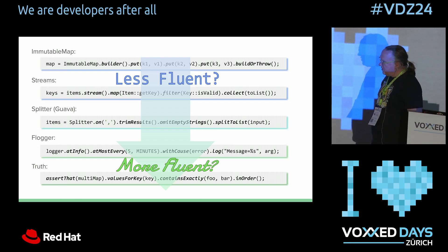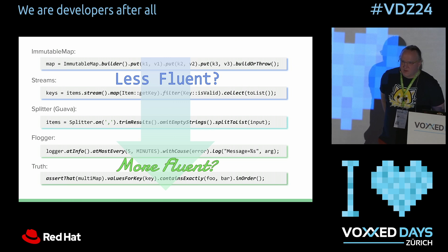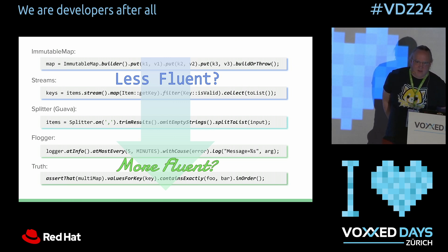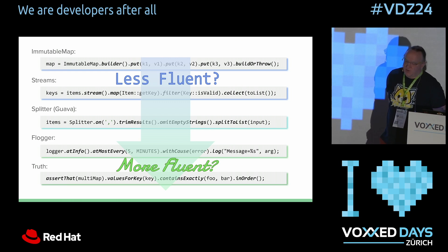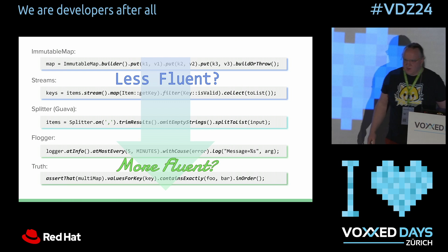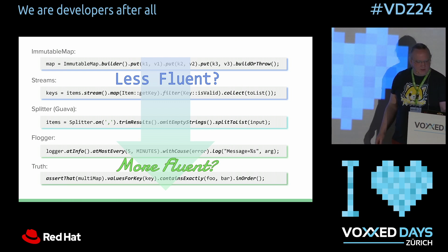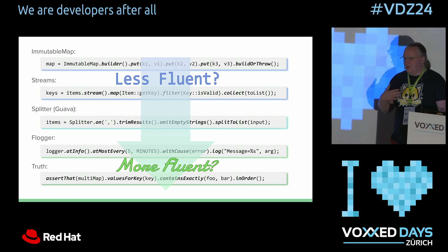I believe that as we go down, we are achieving something that we might call fluency in the API. This would come just from a linguistic point of view. The lower examples seem to read a bit more like an English sentence — and I apologize that this is only talking about English APIs; I have not experienced fluency in non-English languages for APIs. But something is changing. Can we analyze it? Can we talk about it? Can we think about it when we're designing?